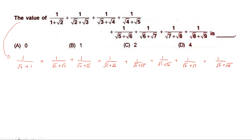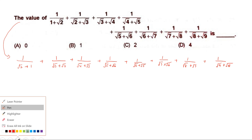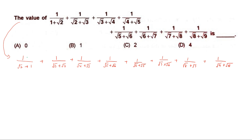For each term I am going to multiply by the conjugate. For the first term, multiply numerator and denominator by (√2−1). For the second term, multiply by (√3−√2). For the third term, multiply by (√4−√3). For the fourth term, the conjugate is (√5−√4), so multiply numerator and denominator by (√5−√4).